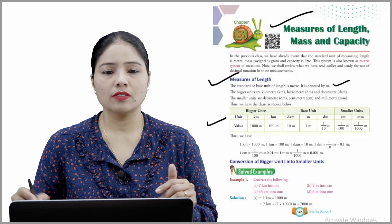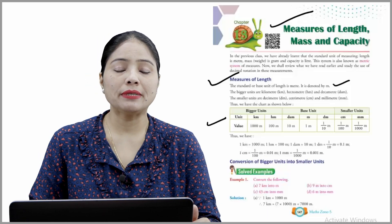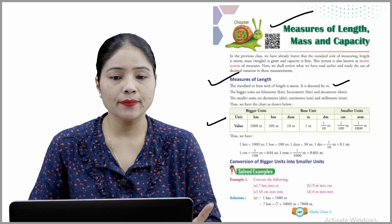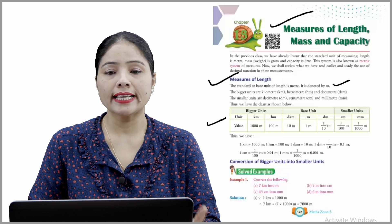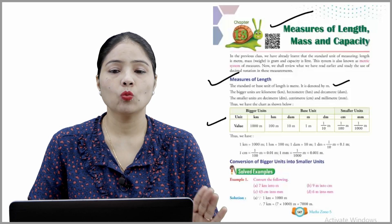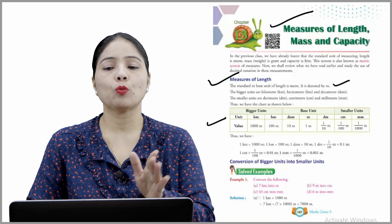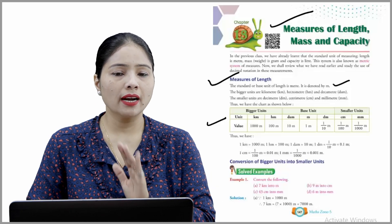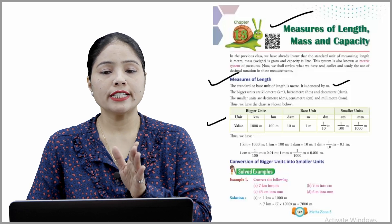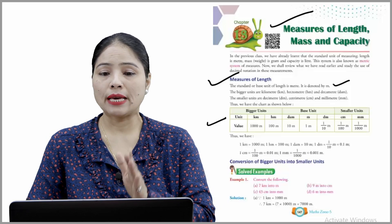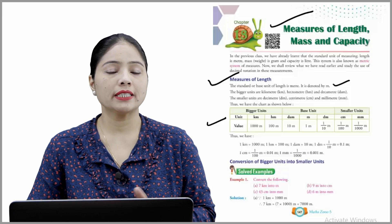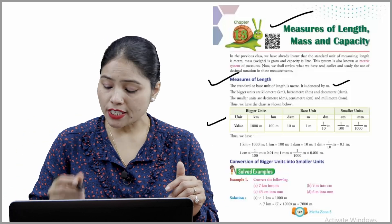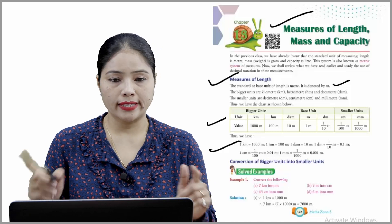Just read and understand it. Thus: 1 kilometer = 1000 meters, 1 hectare = 100 meters, 1 dam = 10 meters, and 1 dm = 1/10 meter = 0.1 meter. Similarly, 1 cm = 1/100 meter = 0.01 meter, and 1 mm = 1/1000 meter = 0.001 meter. Remember all these terms very nicely.